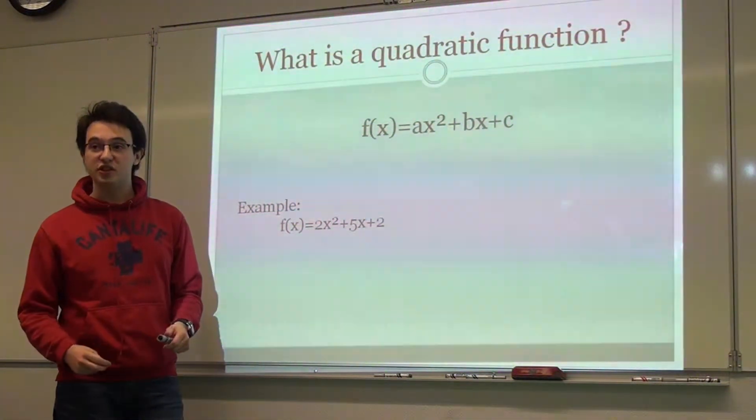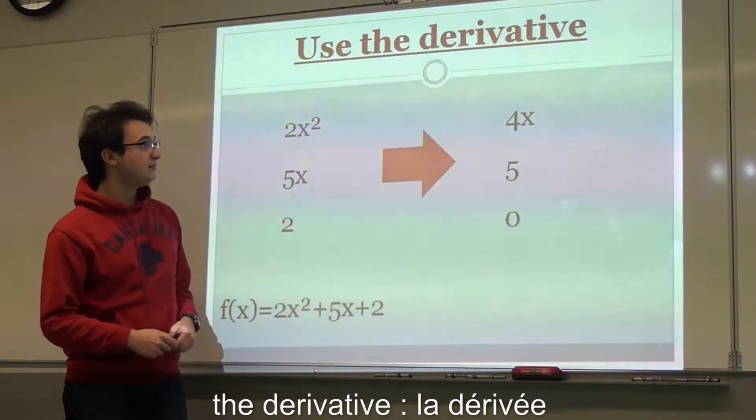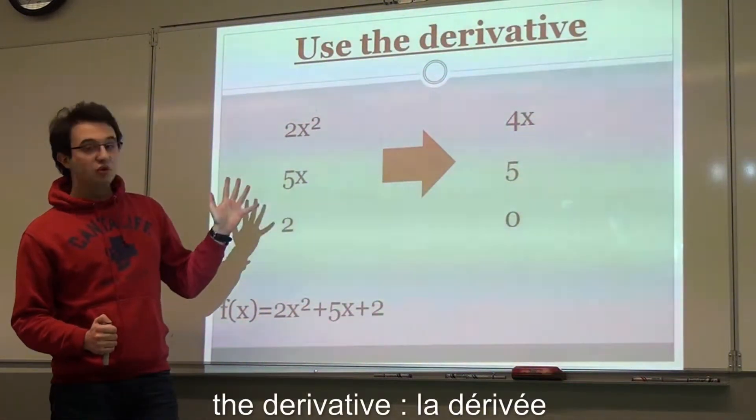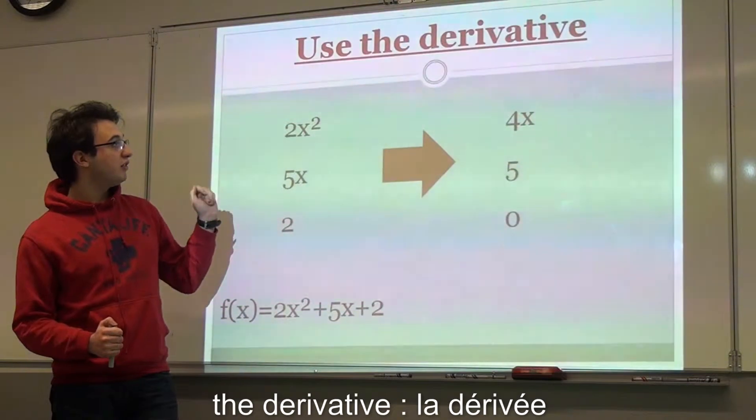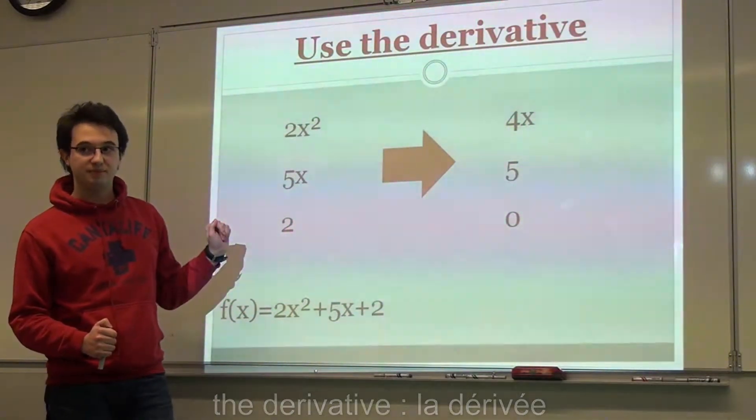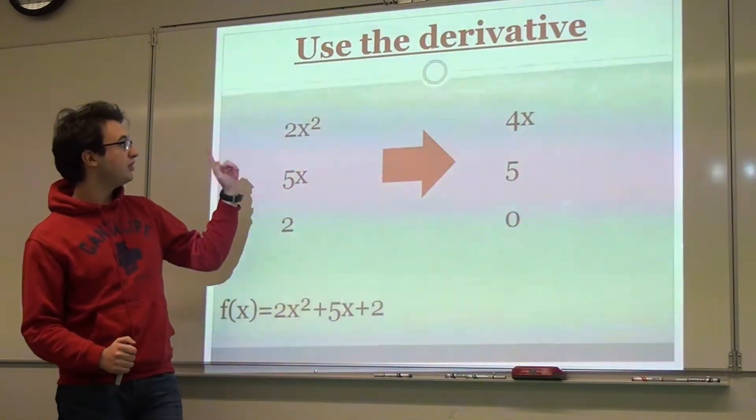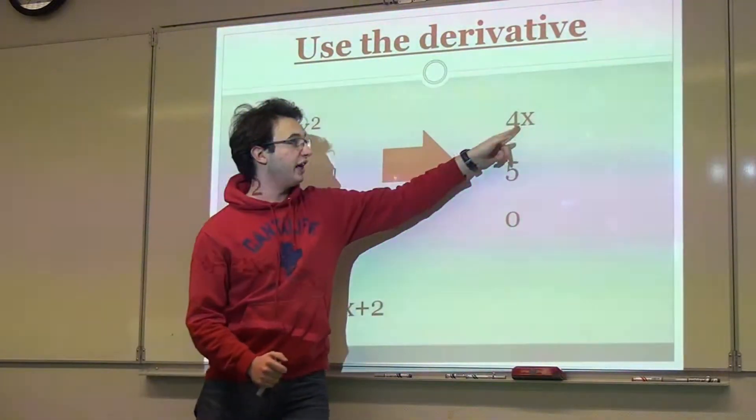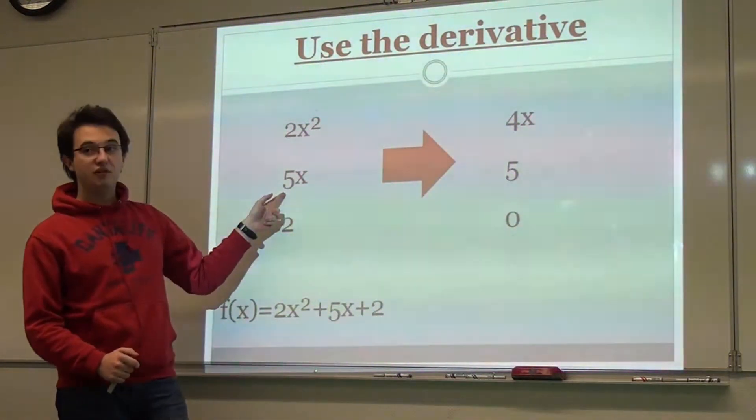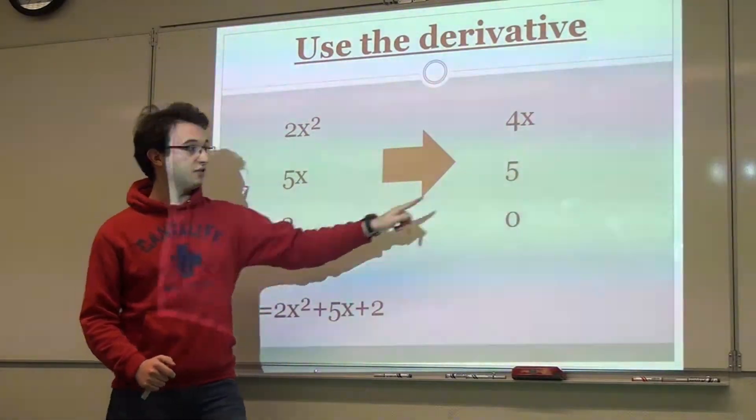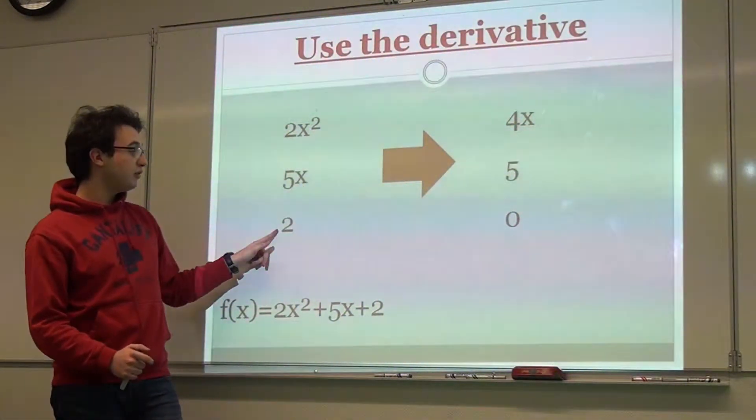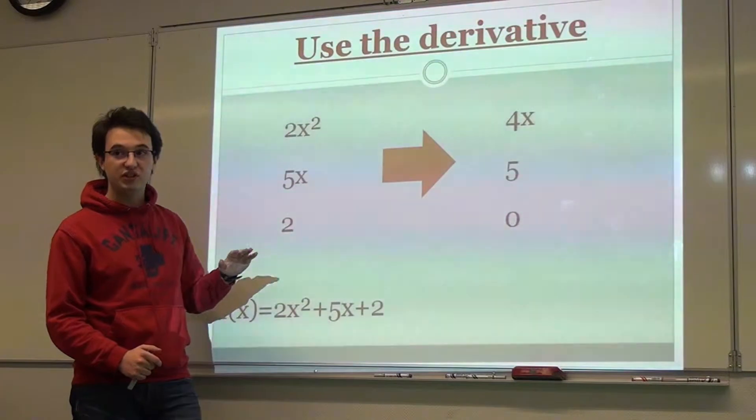Now I'm going to use the derivative on each term. The derivative of 2x² is 4x. The derivative of 5x is 5. And the derivative of a constant is always equal to 0.